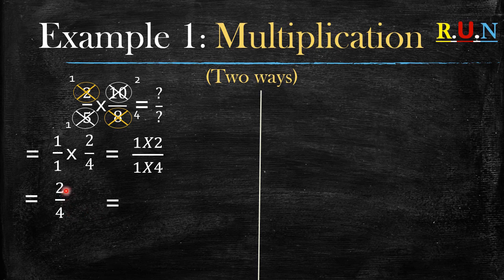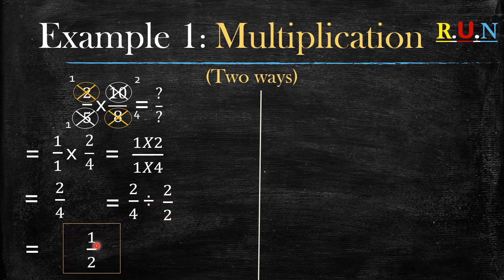What's the highest common factor of two and four? It's actually two. So you divide the numerator by two and the denominator by two as well. What do you get? Two divided by two gives you one. Four divided by two gives you two.